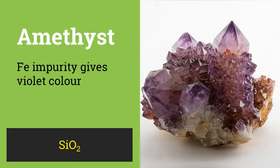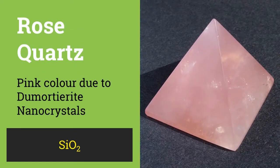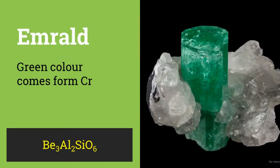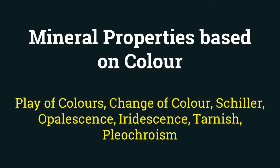Amethyst is another allochromatic quartz which gets its violet color also by iron. Rose quartz gets its color from dumortierite crystals, although earlier it was believed that the source of pink color is titanium, iron or beryllium, which is now known that it isn't. Beryl can be of many colors due to small amounts of different trace elements, and its vivid green variety is called emerald, whose color comes from chromium impurity.